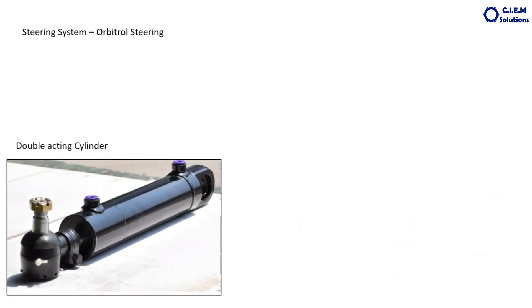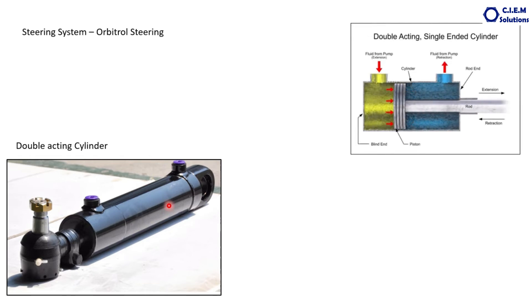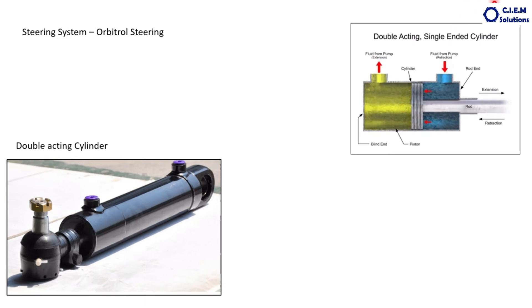Now we will look at the cylinders. This type of system uses heavy-duty double-acting cylinders. Double-acting means the piston moves in both directions with hydraulic pressure. If oil comes in from one direction, the piston moves out and the oil on the other side discharges to the tank. When oil comes from the other direction, the piston moves inside and the discharge oil goes the other way. That is why it is called a double-acting piston.